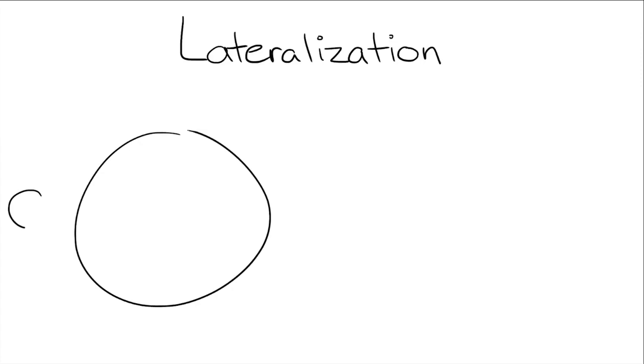Why do we have a dominant side? Lateralization. This refers to some brain functions taking place in one hemisphere, or one side, rather than the other.